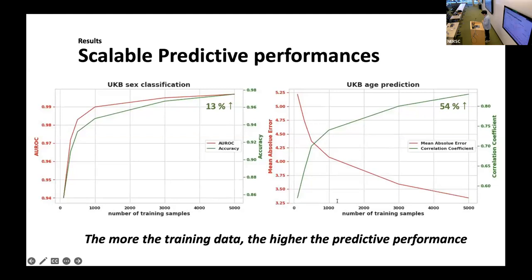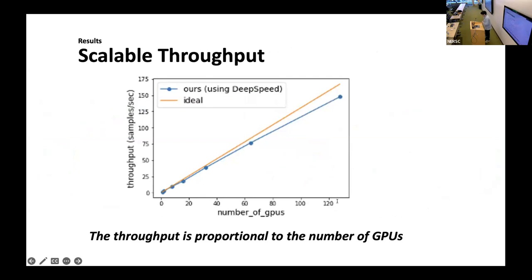SWIFT showed consistent performance increase with more training data. In baby sex and age prediction tasks, it showed 13% and 54% performance increases from 100 samples to 5,000 samples. This suggests that SWIFT can be trained effectively with a large number of data. It is notable that the model can predict these variables to some extent with only 100 samples. Using only 300 fMRI scans, SWIFT outperforms BNT trained with more than 6,000 samples. We also tested the scalability of SWIFT with DeepSpeed on Perlmutter, and observed that throughput increases proportionally as the number of GPUs increases.